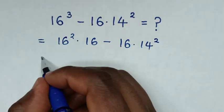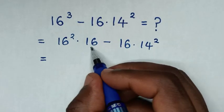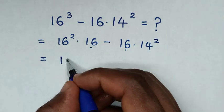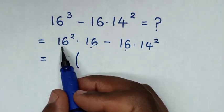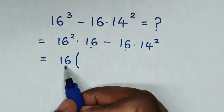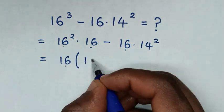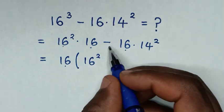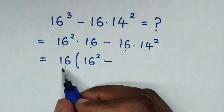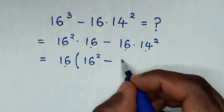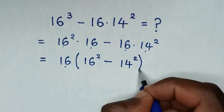Then in the next step, it will be equal to... in here 16 is common, so take 16 out of the bracket. Then 16 square times 16 divided by 16 is 16 square, then minus 16 times 14 square divided by 16 is 14 square bracket.